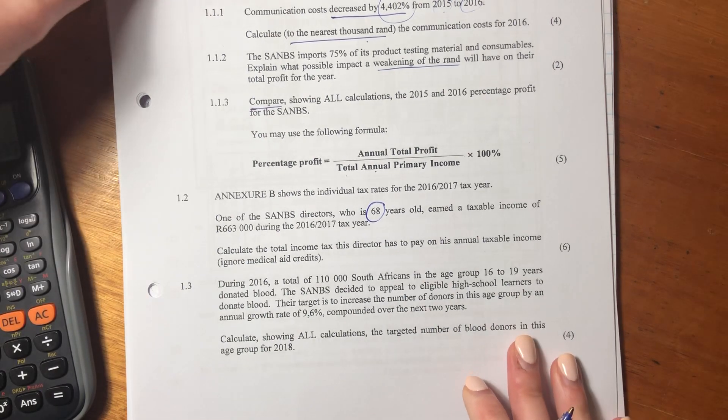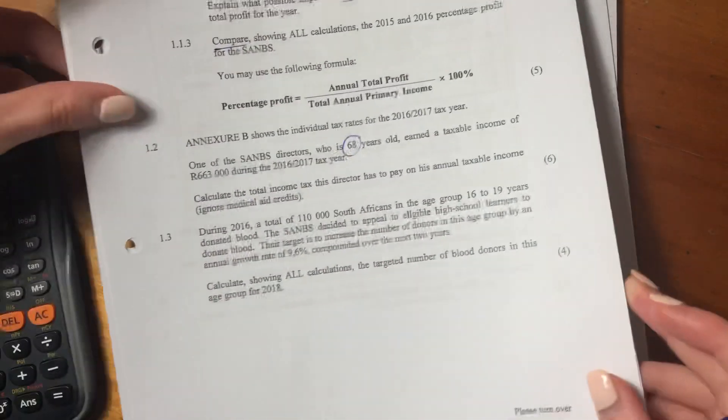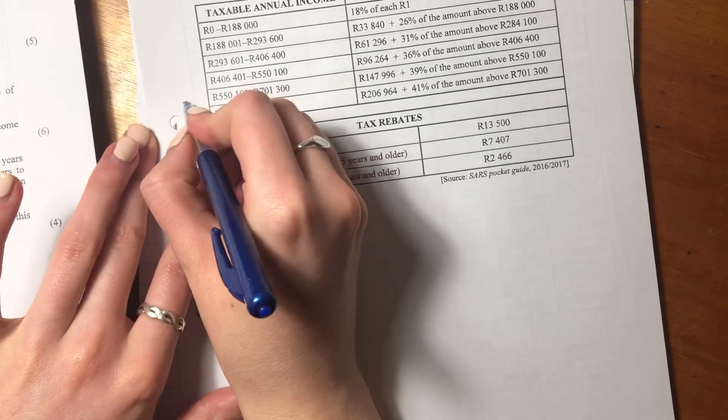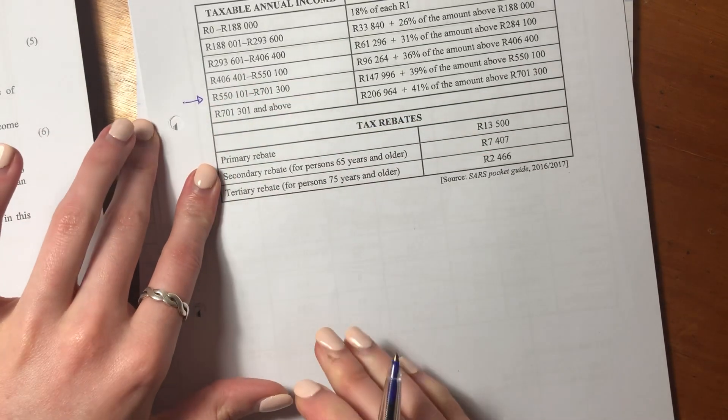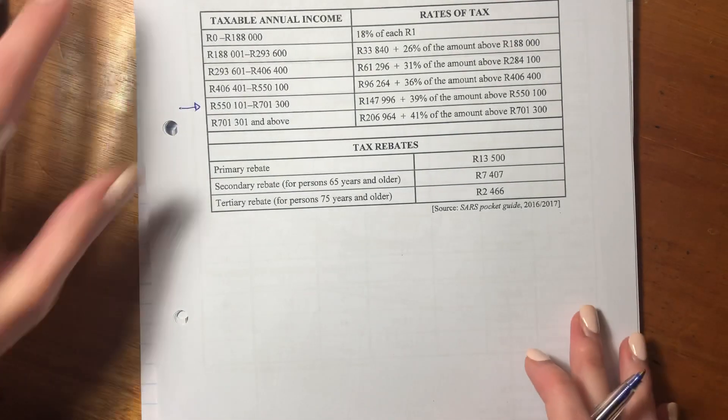Okay, let's do that. So let's go to Annex B. So we know he earns—how much does he earn? $663,000. So where is he going to be taxed? He's taxed in that bracket. So let's figure out how this is going to work.